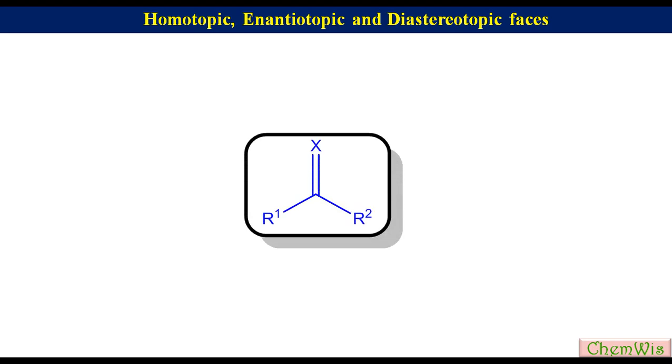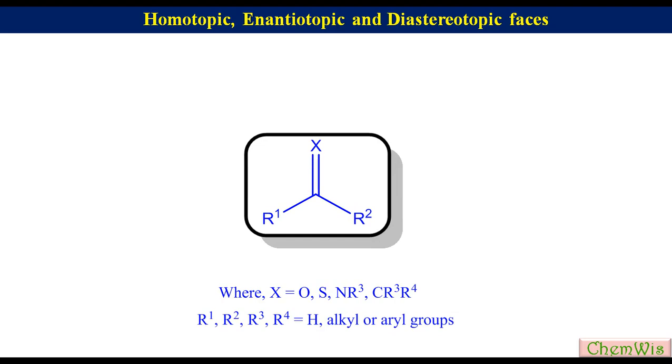Hello friends, welcome to the stereochemistry lecture. In the last lecture we discussed homotopic, enantiotopic, and diastereotopic atoms or groups. Today we are going to discuss homotopic, enantiotopic, and diastereotopic faces. Suppose we have a molecule with a general structural formula where X is equal to oxygen, sulfur, substituted or unsubstituted nitrogen, or substituted, partially substituted, or unsubstituted carbon. R1, R2, R3, and R4 are hydrogen, alkyl, or aryl groups — meaning the compound is an alkene, aldehyde, or ketone.